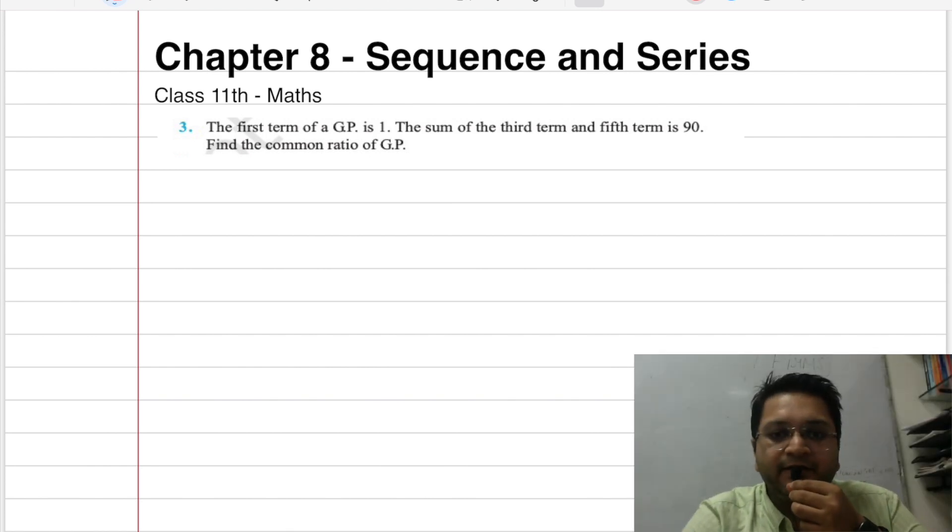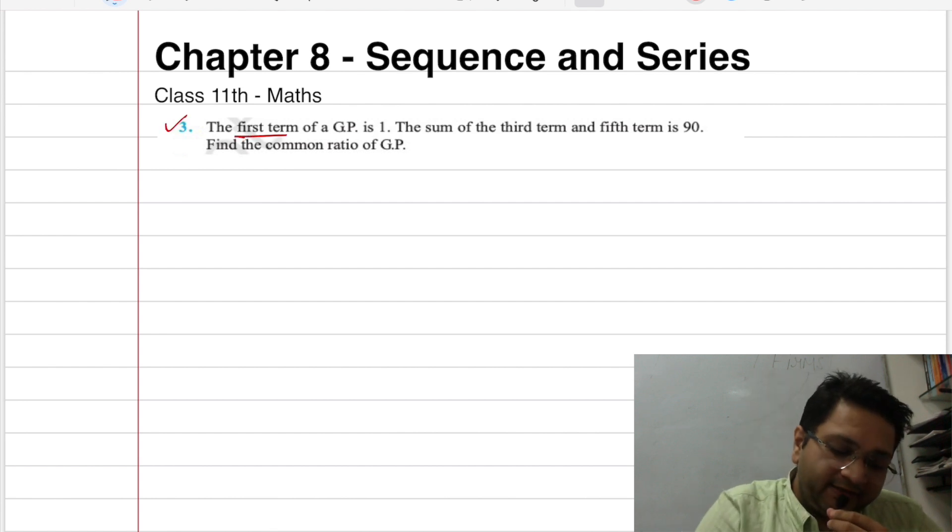As we continue, we are moving on to question number 3 here. In this question, we have told you that the first term of a GP is 1. So this means that I have given the first term 1.